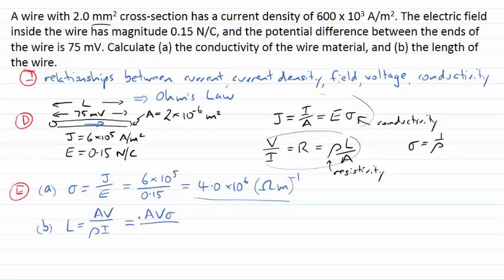And rather than writing current as I, I might use the microscopic form of ohms, or the definition of current density here, to write my current as simply my current density multiplied by area. And then I can see that my area is actually cancelled top and bottom, and I'm left with a reasonably simple calculation to do here, all using quantities that I've either been given or have just calculated.